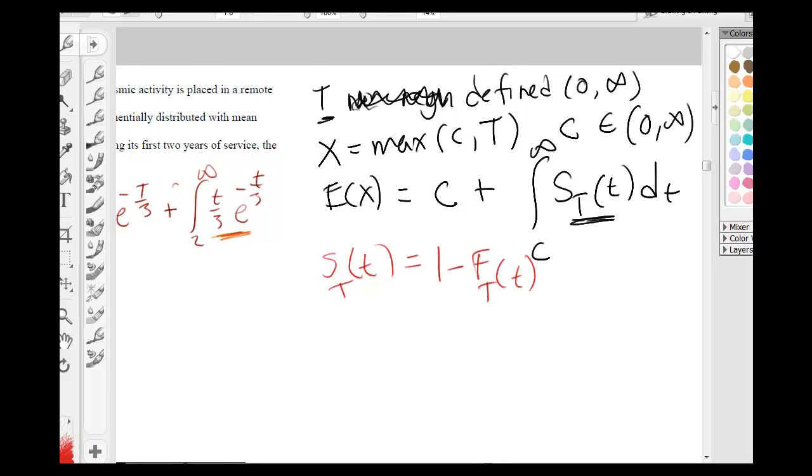So, in here, the survival function would just equal to e to the negative t/3. That makes things a lot easier,